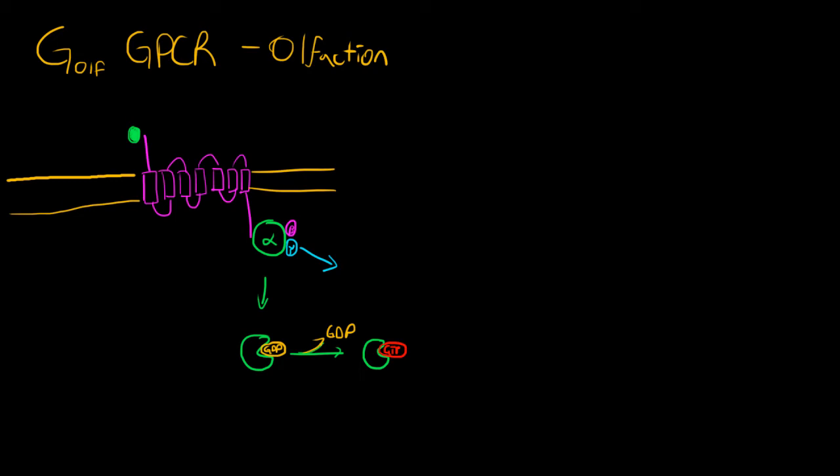Very similar to how the epinephrine and glucagon receptors worked, your alpha subunit is going to swing up and activate actually the same enzyme, adenylate cyclase.